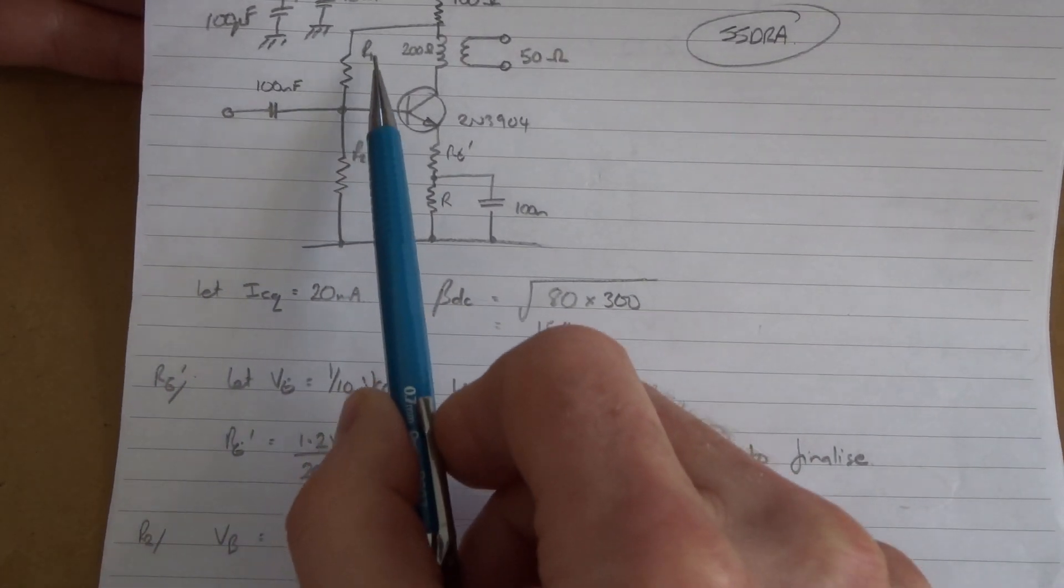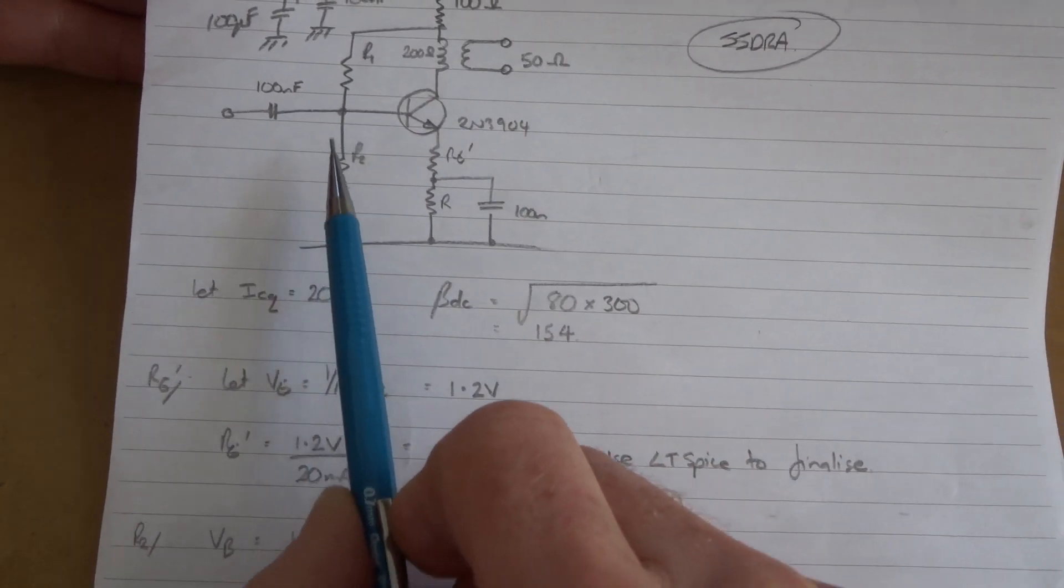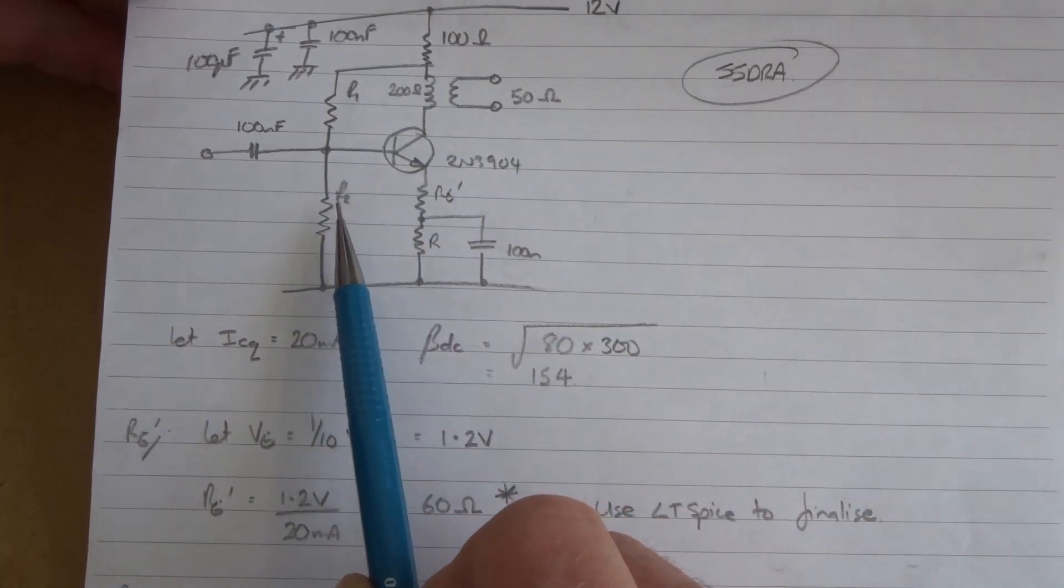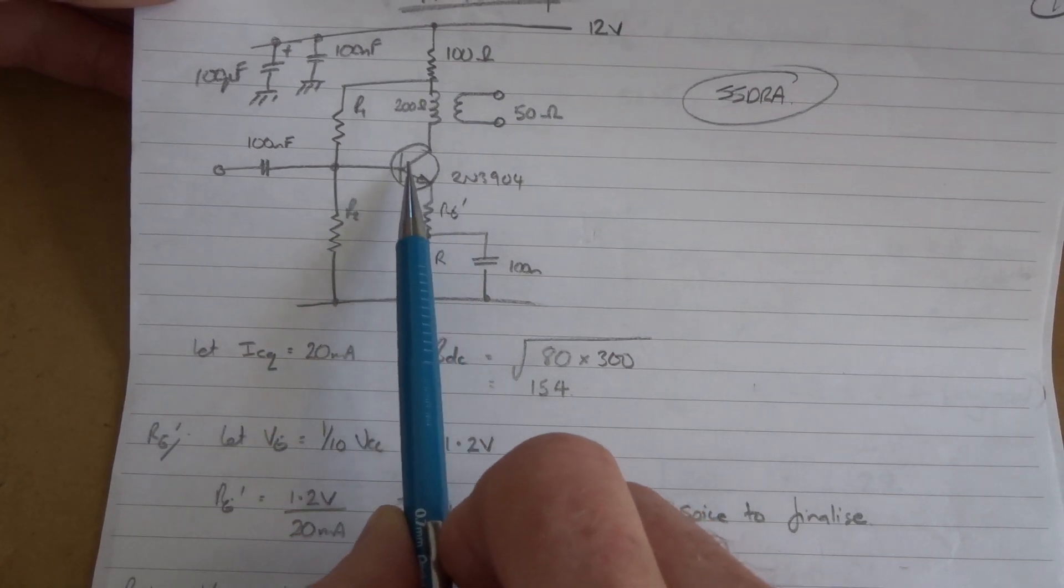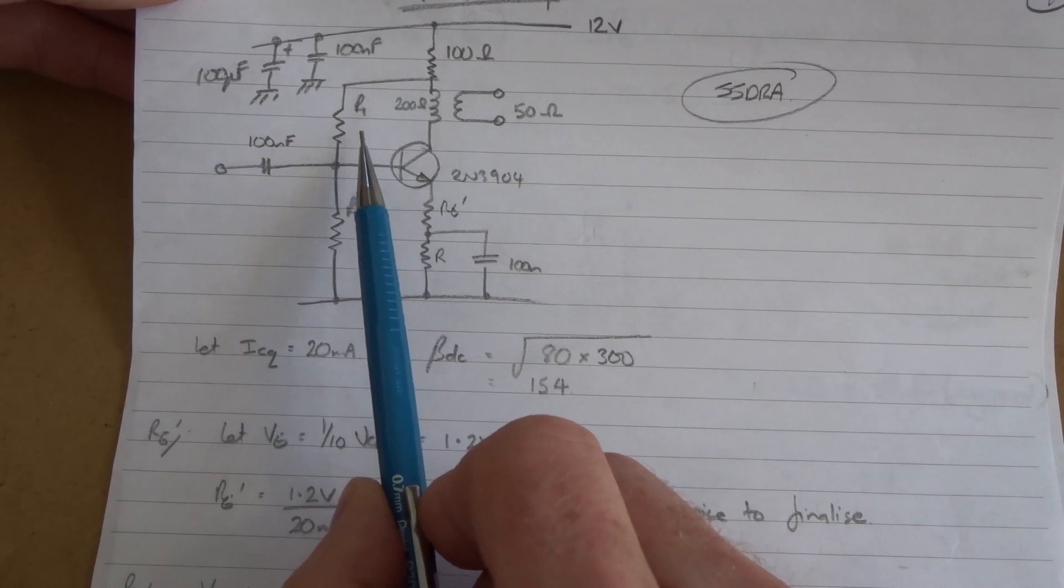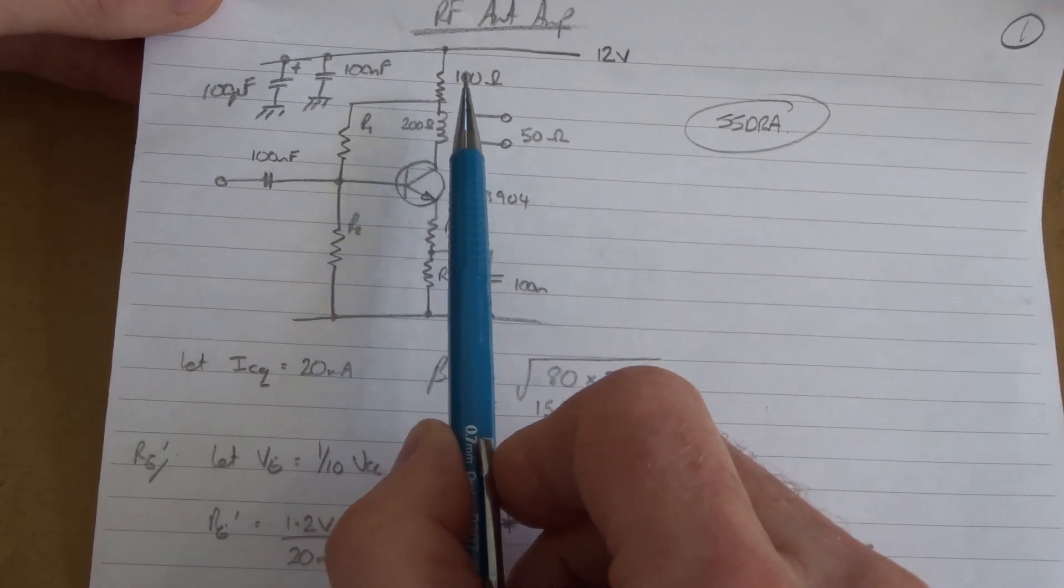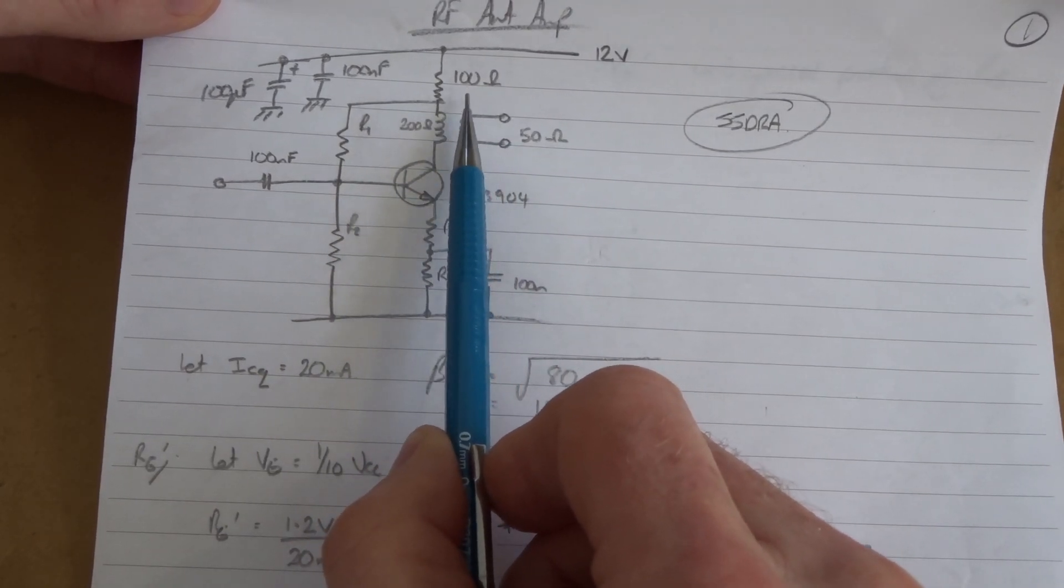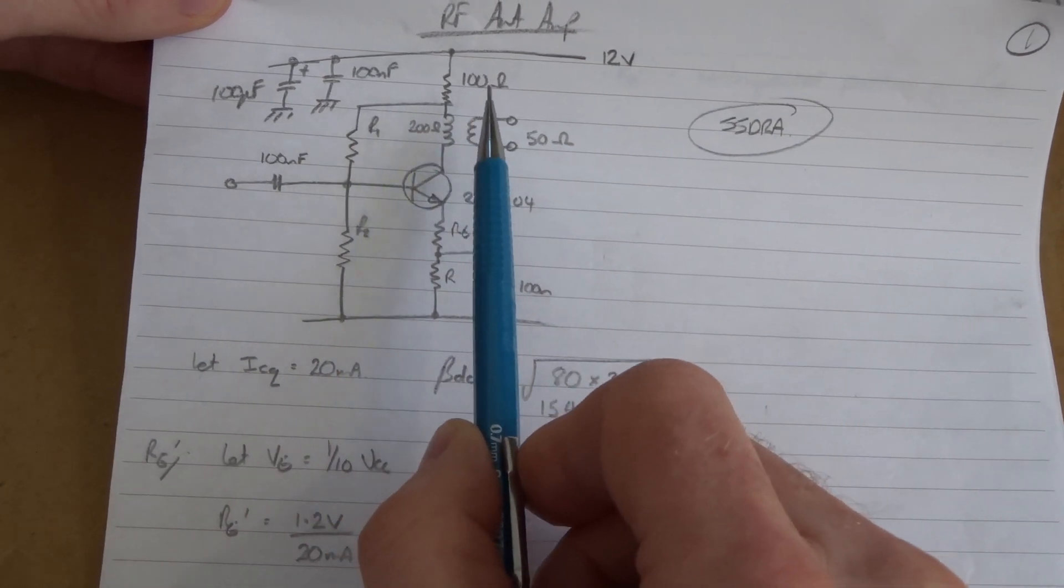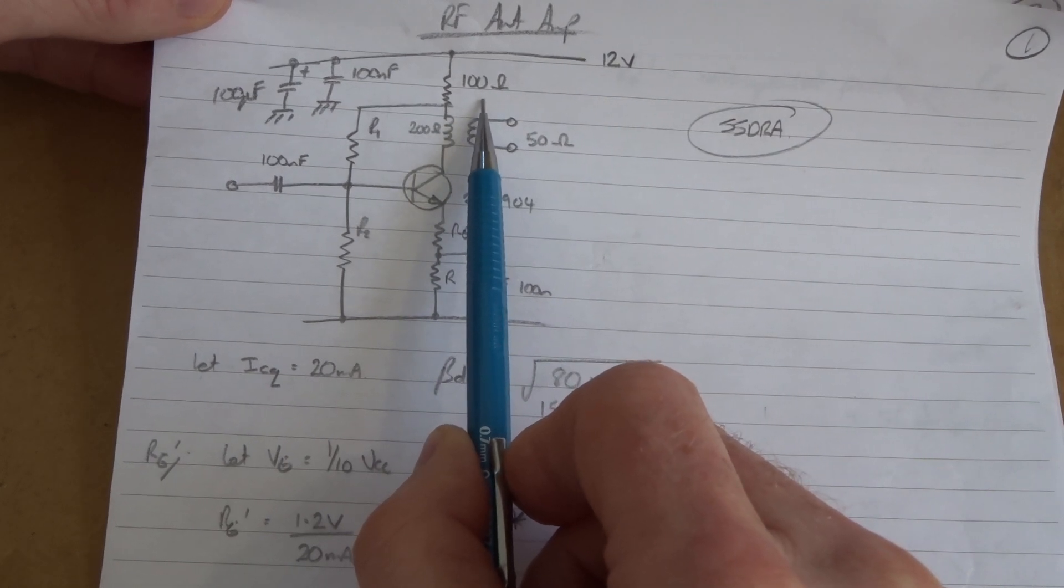We've talked about having a nice stiff voltage divider biasing, so we want at least 10 times the base current through this leading to VCC, with 10 times passing through here and then 11 times going through R2 with that additional base current. I'm also taking into consideration the voltage drop across this 100 ohm resistor - it's relatively high, so there's an appreciable voltage drop at 20mA of 2 volts.